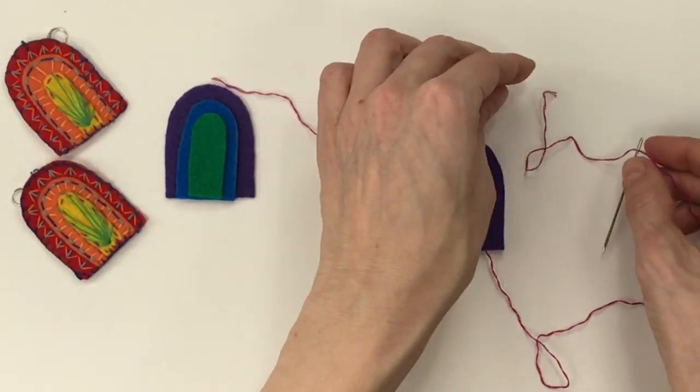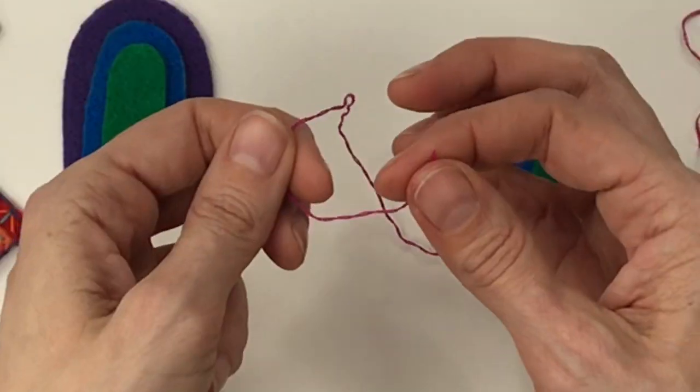If you happen to have a little bit of wax or even chapstick on hand, rub the floss over that to help straighten it out.